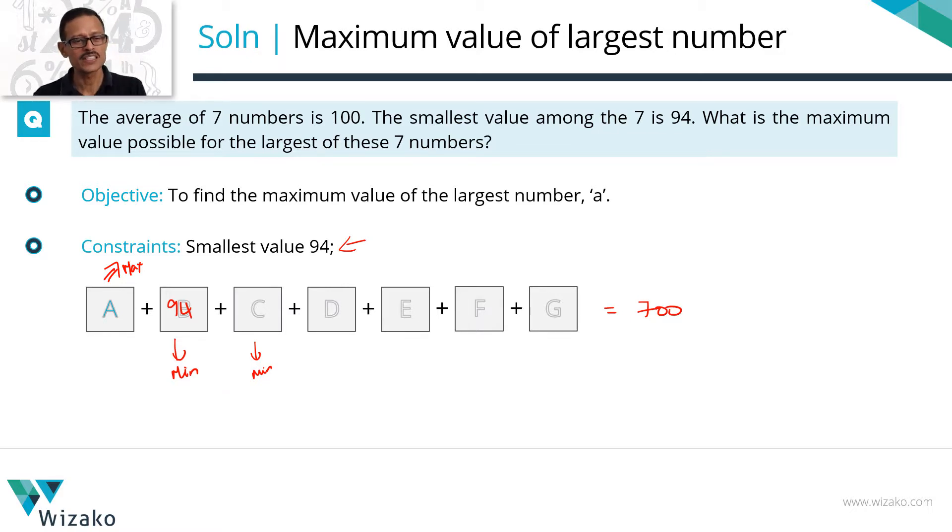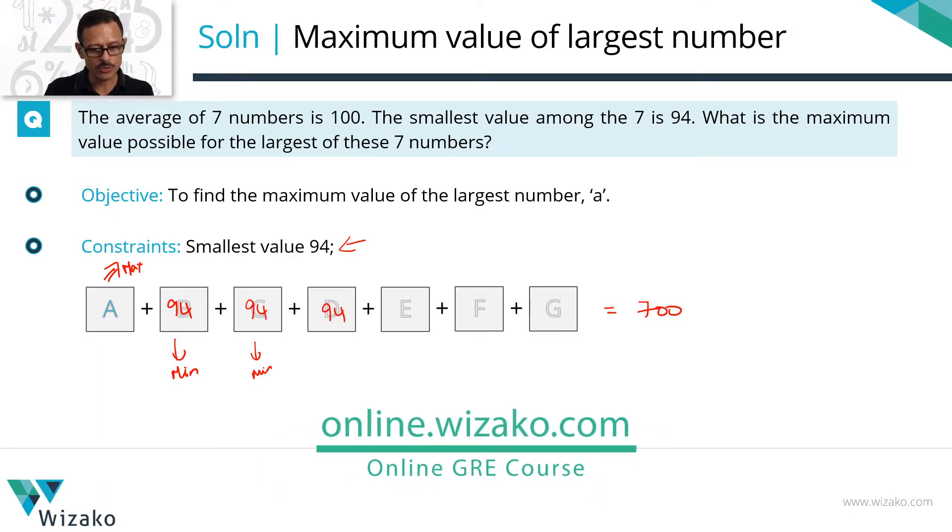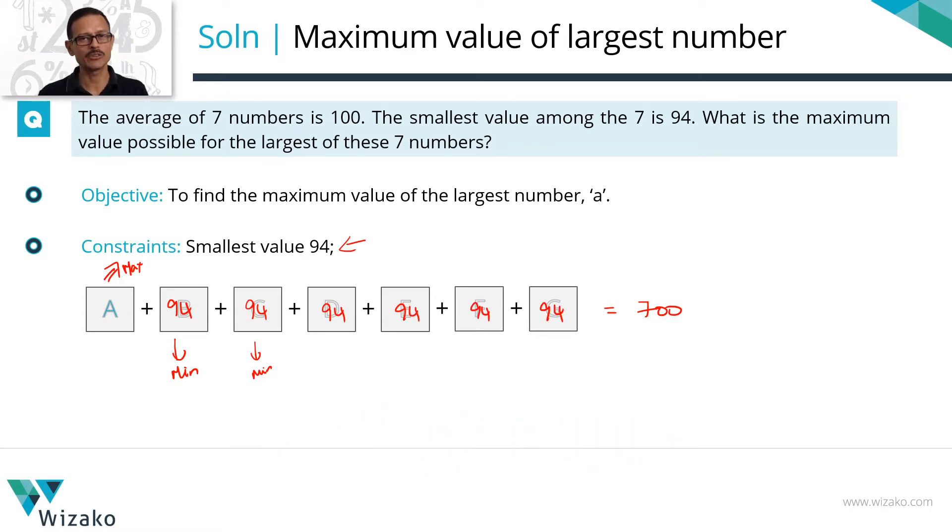Can C be a 94? Is there anything in the question statement that prevents C from being a 94? The question statement does not say that these numbers are distinct. It says that the least possible value for any number in this group is a 94. So if B is a 94, so can C be a 94, so can D be a 94, so can E be a 94, so can F be a 94, so can G be a 94.